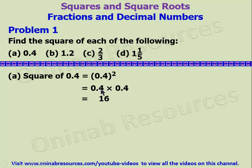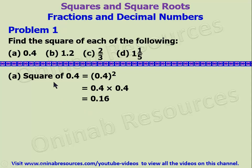In 0.4 we have 1 decimal place, and in the second 0.4 we have 1 decimal place. So the total number of decimal places altogether is 2. Our final answer is going to be in 2 decimal places. So we count from behind: 1, 2. We place the decimal point and introduce 0. So the square of 0.4 is 0.16.